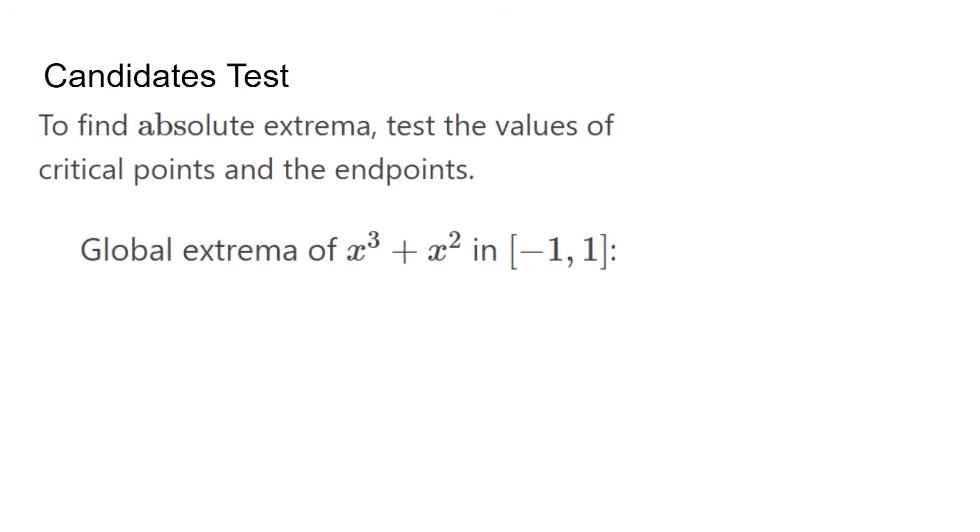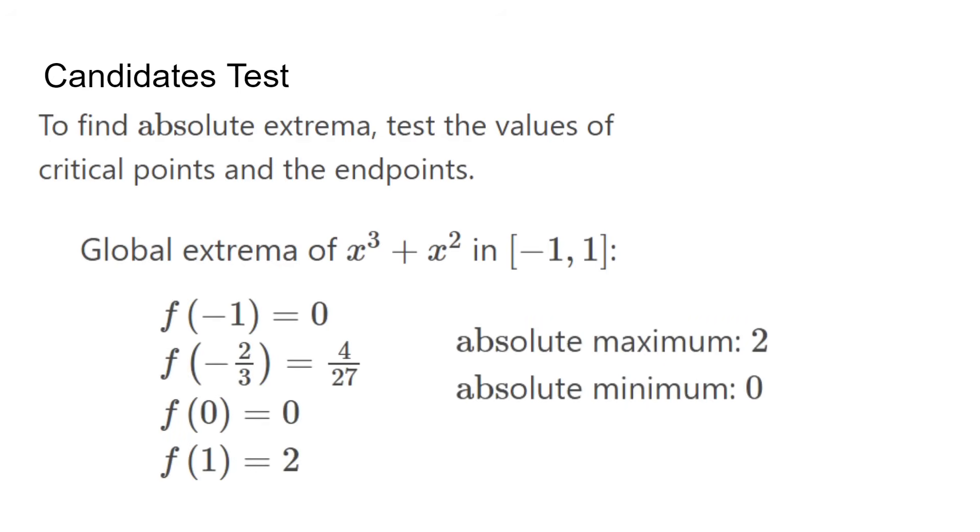Similarly, we test global extrema, which are the highest or lowest points over the whole interval. With the same function and interval negative 1 to 1, our candidates would be the critical points and the end points. So in total, negative 1, 1, negative 2 thirds and 0. We plug each of these into f of x and the absolute maximum is 2. The absolute minimum would be 0. We generally refer to the y value, but you could also say that the absolute maximum occurs at x equals 1.